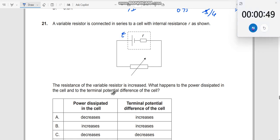Okay. The resistance of the variable resistor is increased. You are increasing this. This is capital R. What happens to the power dissipated in the cell and to the terminal potential difference of the cell?